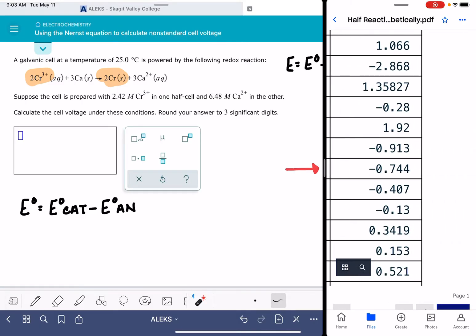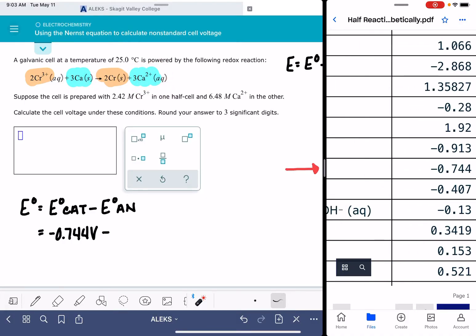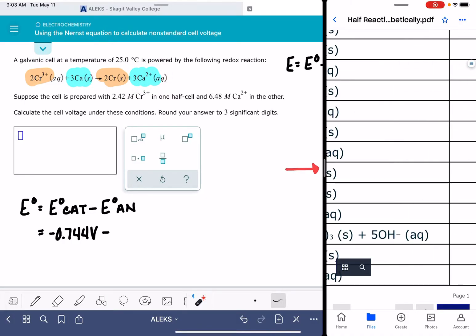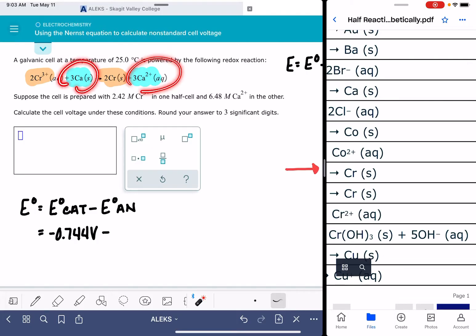The voltage for this reduction reaction is negative 0.744 volts. Now let's go find the reaction that's taking place at the anode. The anode is the reaction that occurs between the calcium and calcium 2 plus. This is an oxidation reaction, so over here on our table of half reactions, we're going to look for this reaction in reverse, meaning that we're looking for the calcium 2 plus on the left-hand side.